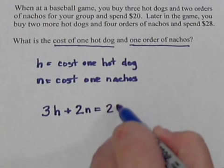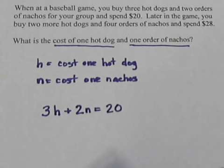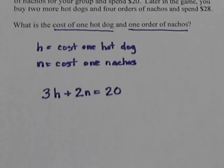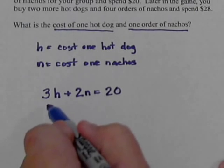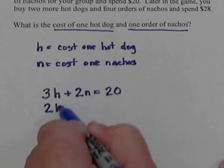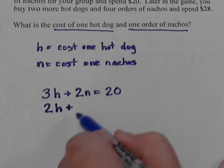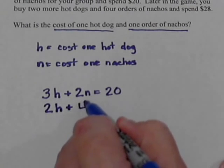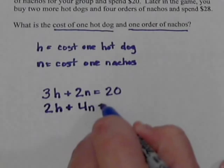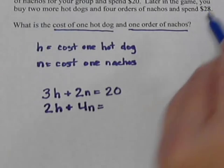Later in the game, we went back. This time we got two hot dogs, so two times h, and then four orders of nachos, so that would be 4n. This time we spent twenty-eight dollars.